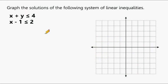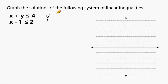In this tutorial, we're going to graph a system of linear inequalities and show where all of the possible solutions lie on the coordinate plane. The first thing we're going to do is take our first inequality and convert it to a form that we can graph — specifically the y = mx + b form, or slope-intercept form.